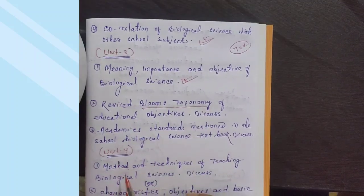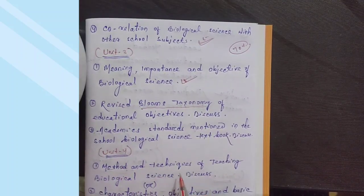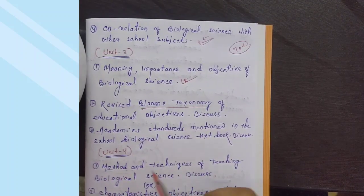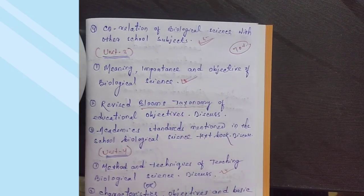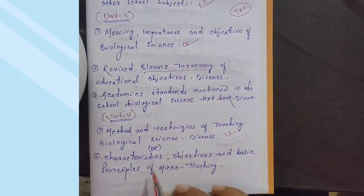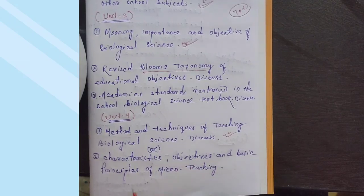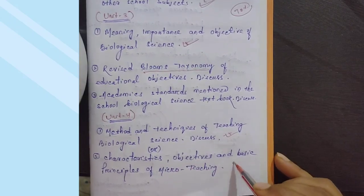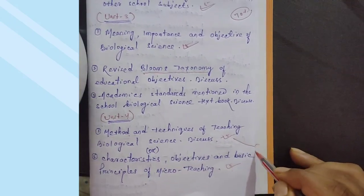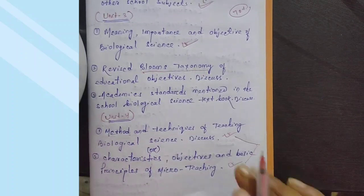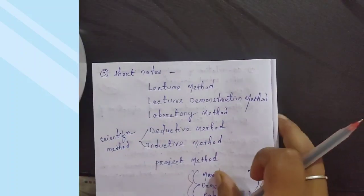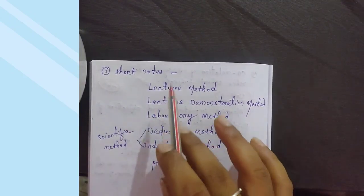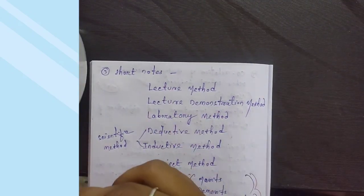Unit 4, first question: Methods and techniques of teaching biological science. This is important, prepare it for five marks. Cover the characteristics, objectives, and basic principles of micro teaching. You can write short notes on these topics separately or together.